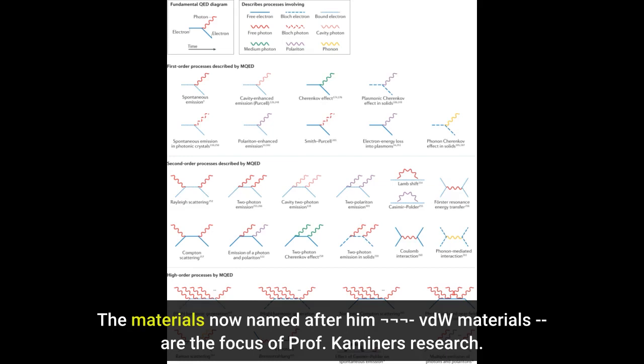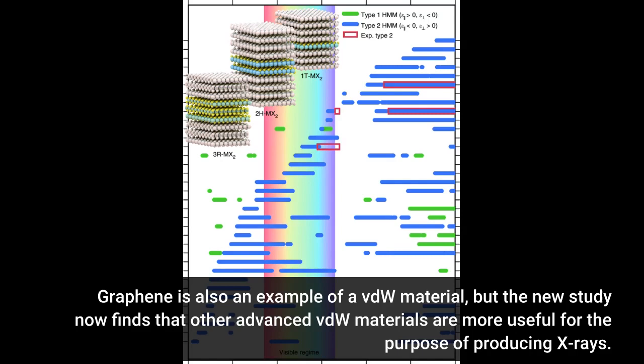Graphene is also an example of a VDW material, but the new study now finds that other advanced VDW materials are more useful for the purpose of producing X-rays.